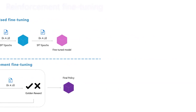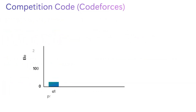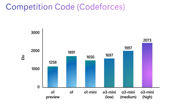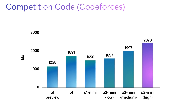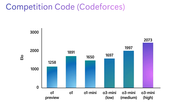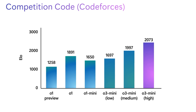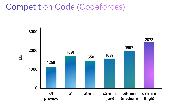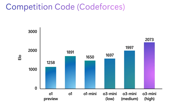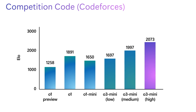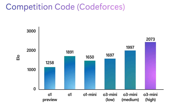This technique, used in frontier models like OpenAI's O3 Mini and DeepSeek R1, enables models to improve with less data and learn how to arrive at correct responses independently, leading to better reasoning and fewer errors.